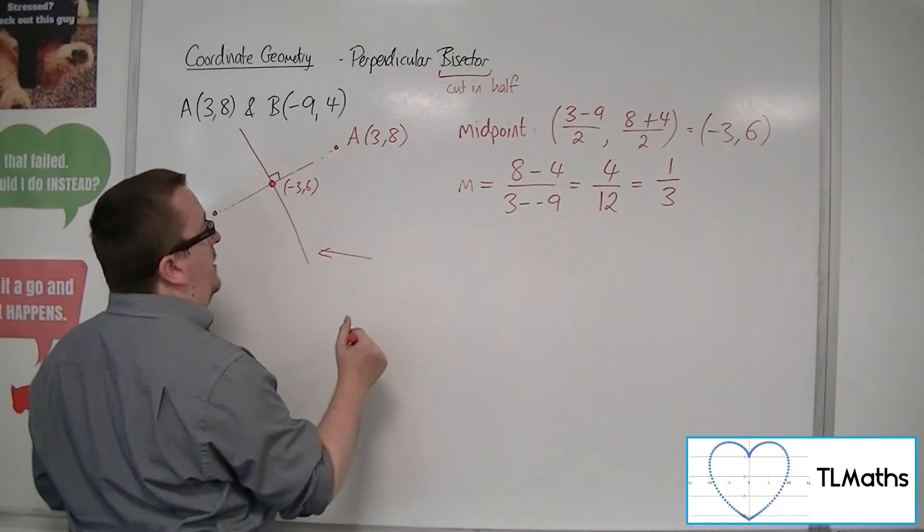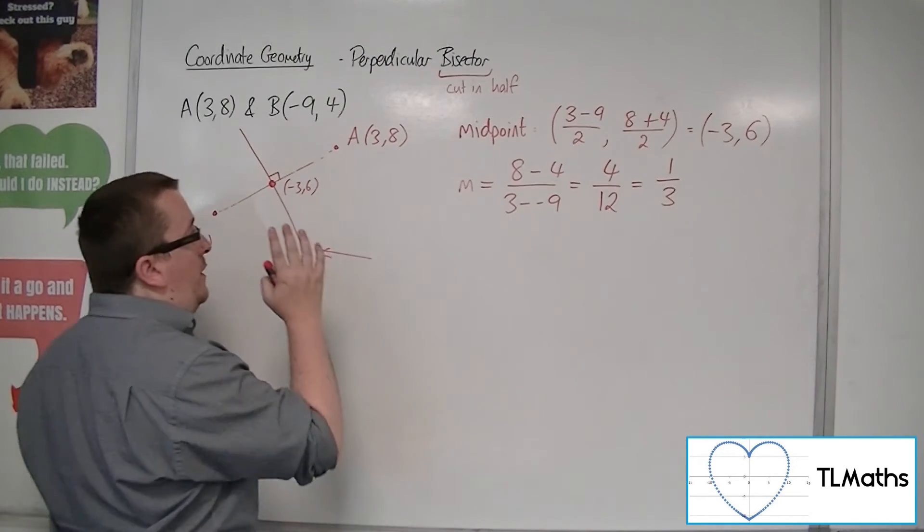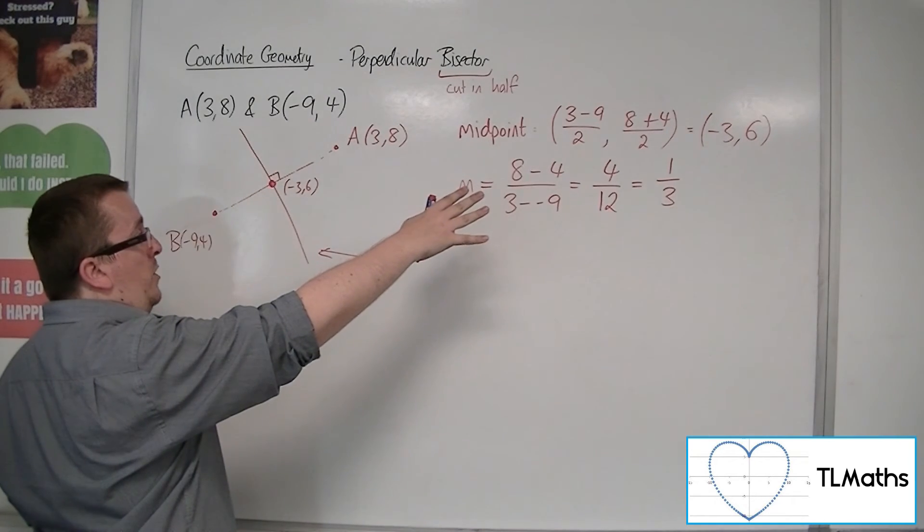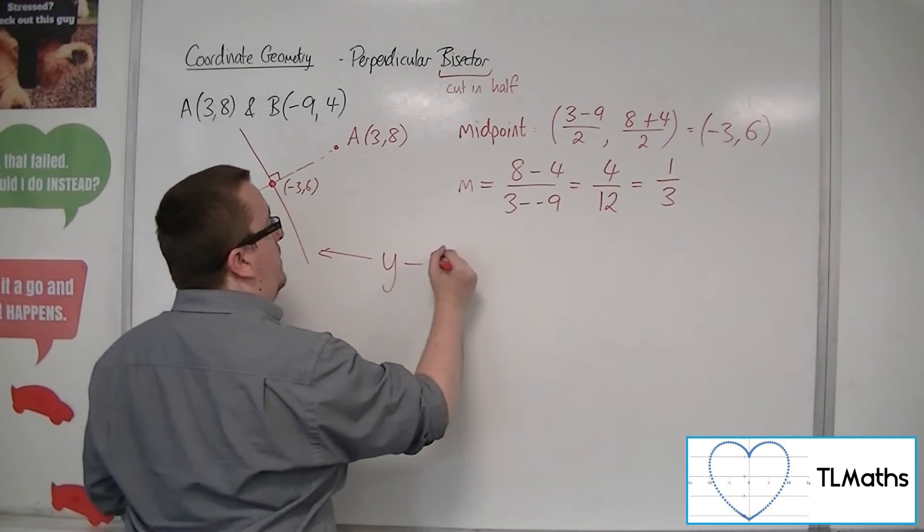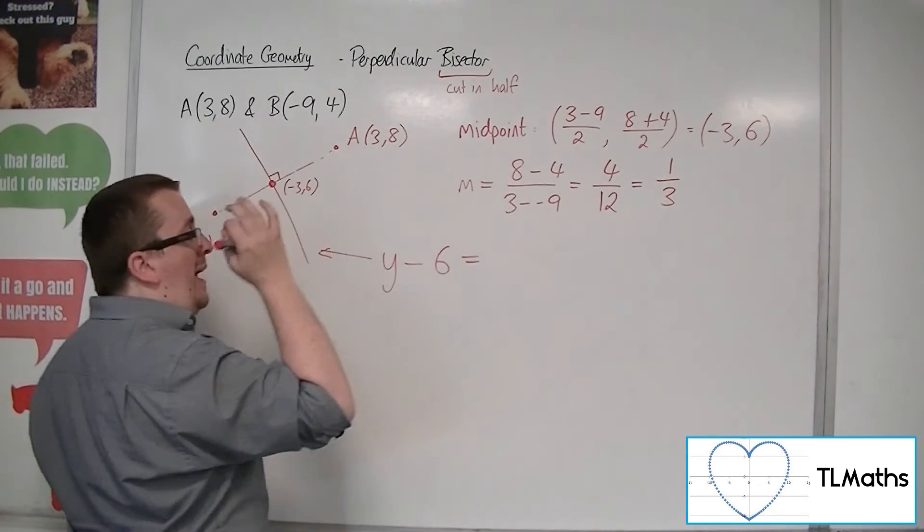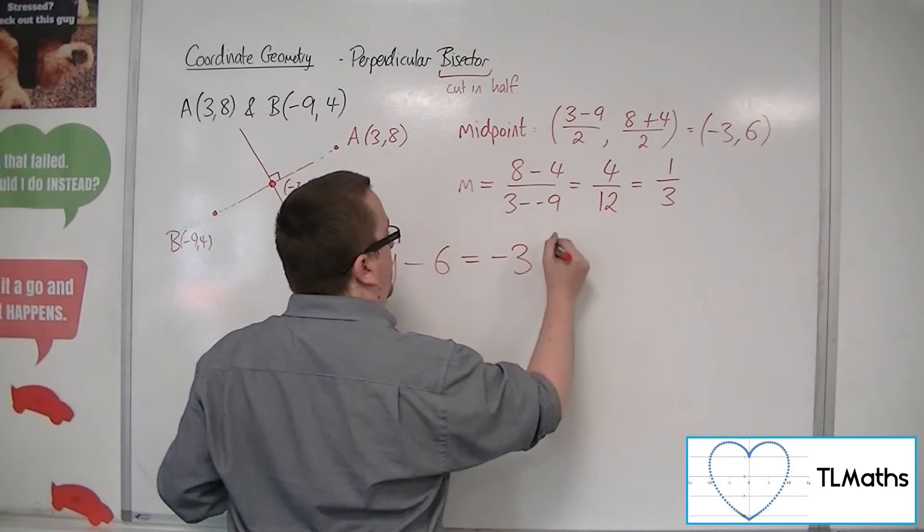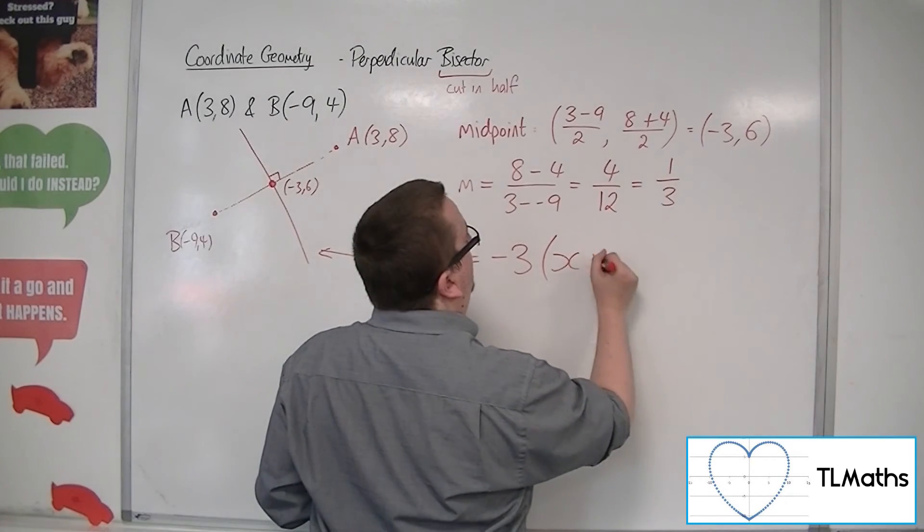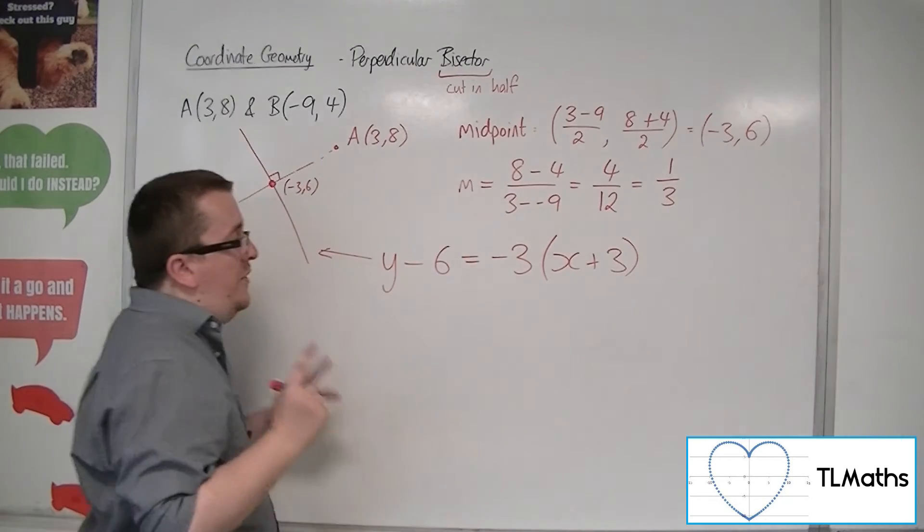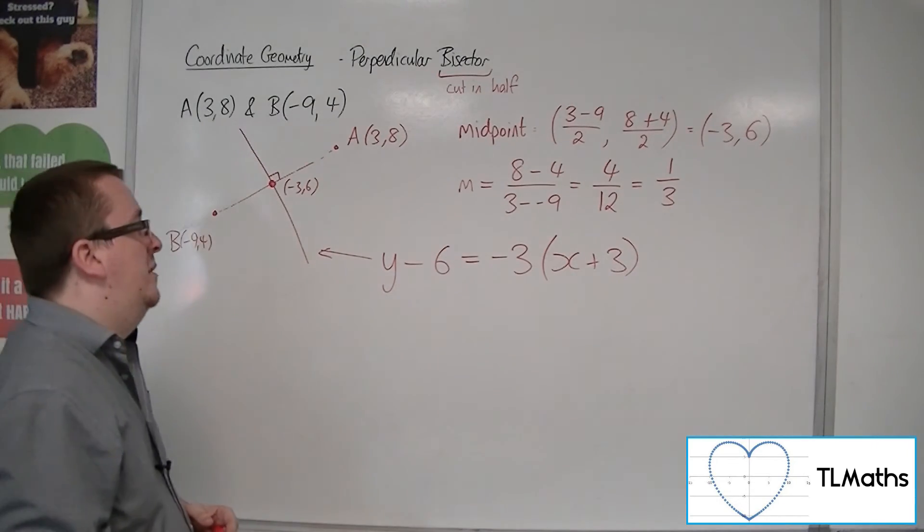So the equation of this line will be, now knowing that it goes to the midpoint minus 3, 6, we can use the y minus y1 form. So y minus 6 is equal to m, the gradient of this line, so minus 3, times x minus x1, so x plus 3. So this is the equation of the perpendicular bisector.